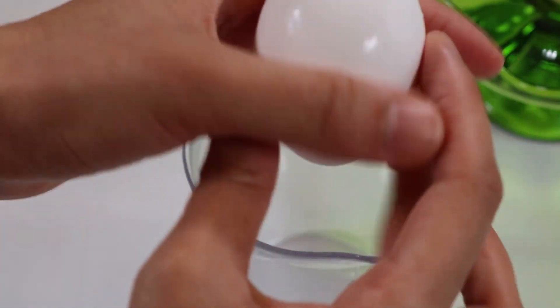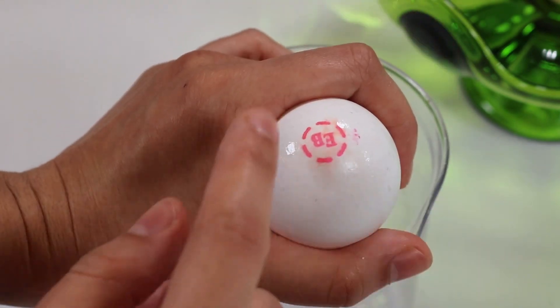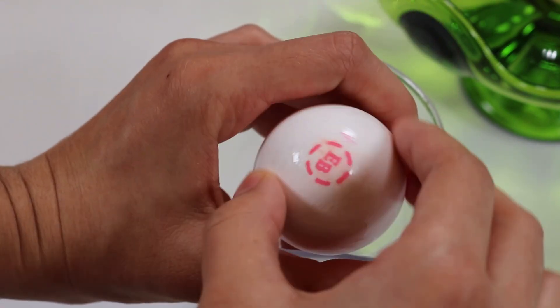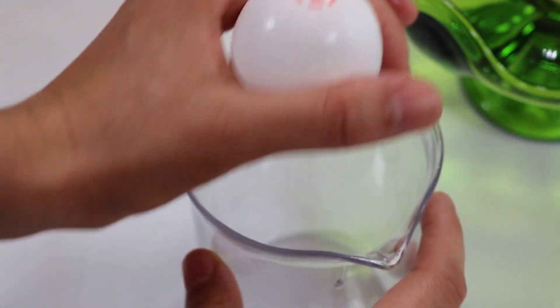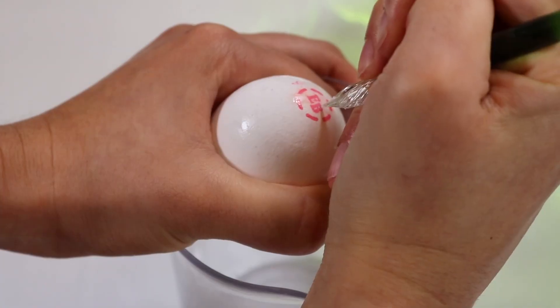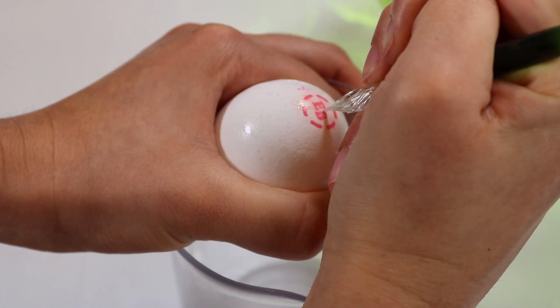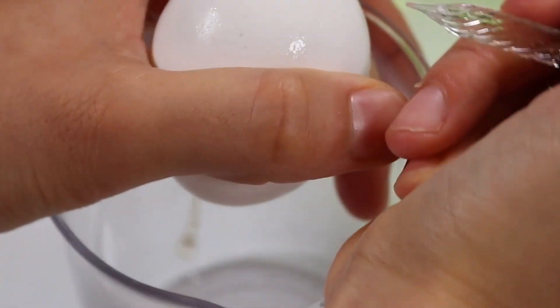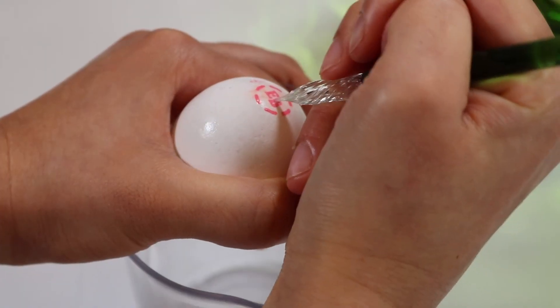Once you're done chipping away the top hole you'll want to get your beaker and you'll want to get it ready so that when you start cutting your second hole it won't leak everywhere. As soon as you start cutting that second hole the egg is going to start leaking out of the first hole you created. So you'll want to have your beaker ready.